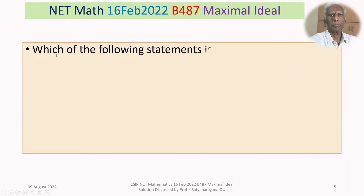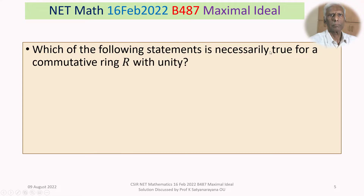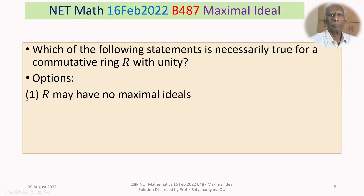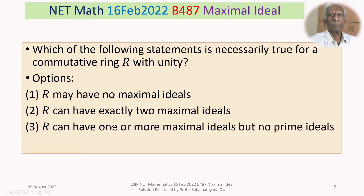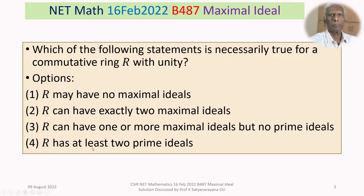The problem is: which of the following statements is necessarily true for a commutative ring R with unity? Option 1 – R may have no maximal ideals. Option 2 – R can have exactly two maximal ideals. Option 3 – R can have one or more maximal ideals but no prime ideals. Option 4 – R has at least two prime ideals.